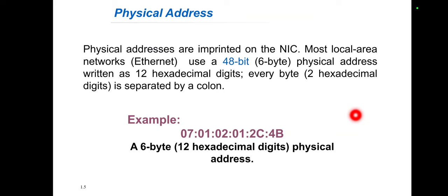Physical addresses are imprinted into the NIC and it uses a 48-bit physical address, which is written in 12 hexadecimal digits. For example, six bytes are required to represent the physical address, and each colon is used to separate every two hexadecimal digits in that particular address.